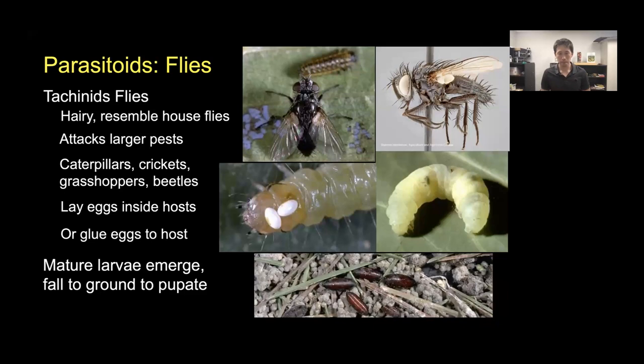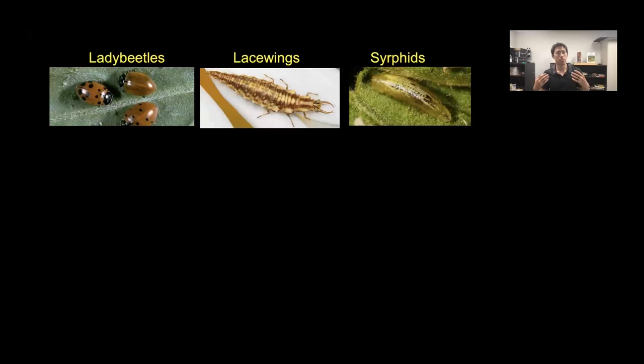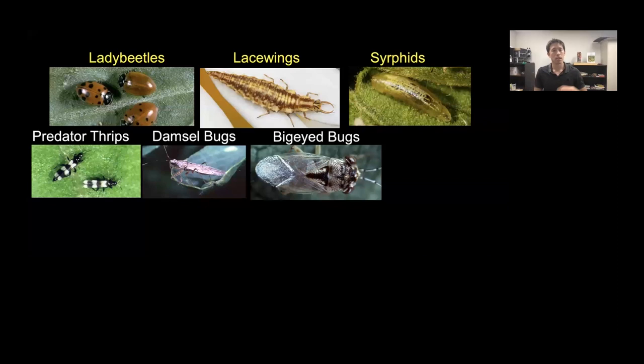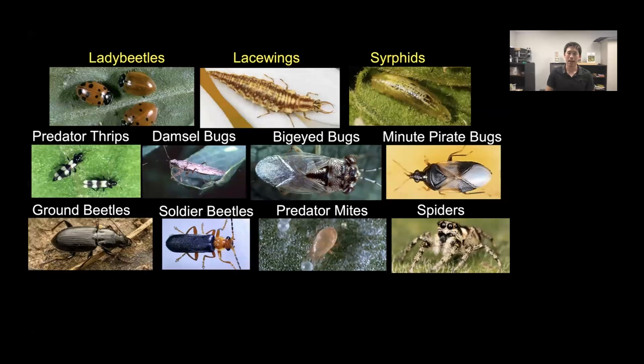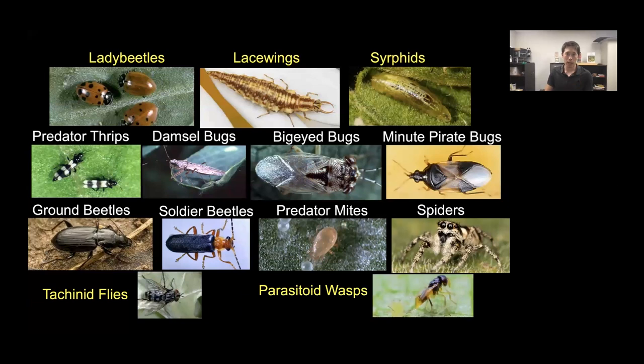To review all the natural enemies covered: the most common predators are lady beetles, lacewings, and syrphid flies. Other beneficial predators include predatory thrips, damsel bugs, big-eyed bugs, minute pirate bugs, ground beetles, and soldier beetles. Non-insect predators like predatory mites and spiders are also very useful. For parasitoids, we have tachinid flies and parasitoid wasps. This isn't comprehensive—there are many other natural enemies—but these are the ones you're most likely to encounter.